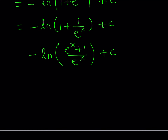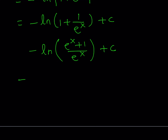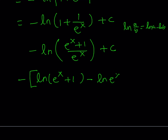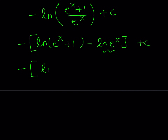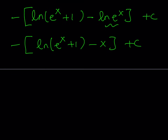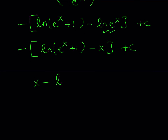Applying the logarithm quotient rule — ln(a/b) equals ln(a) minus ln(b) — and keeping the negative sign from the front, we get negative of [ln(eˣ+1) minus ln(eˣ)]. Since ln(eˣ) equals x, this becomes negative of [ln(eˣ+1) minus x]. Negating everything inside the brackets gives x minus ln(eˣ+1) plus c.